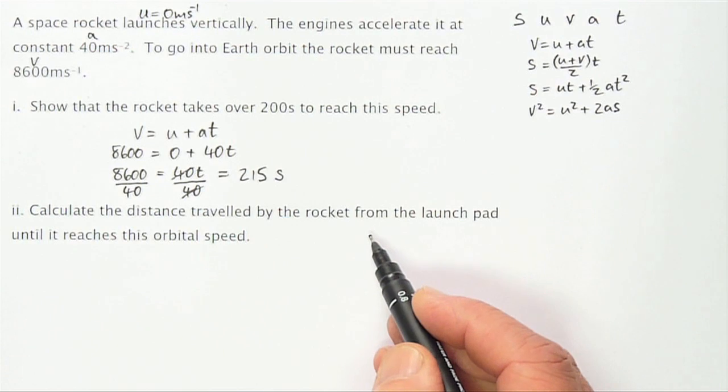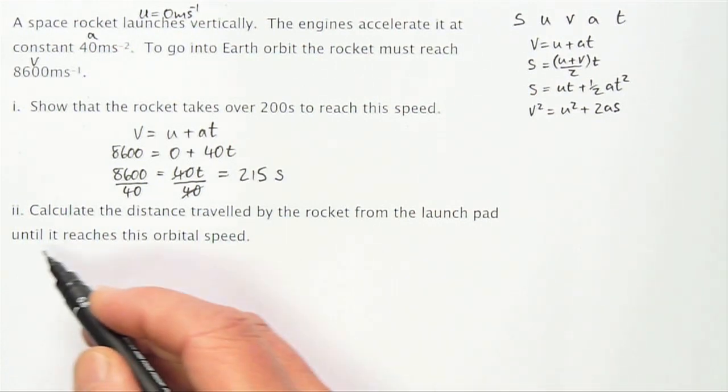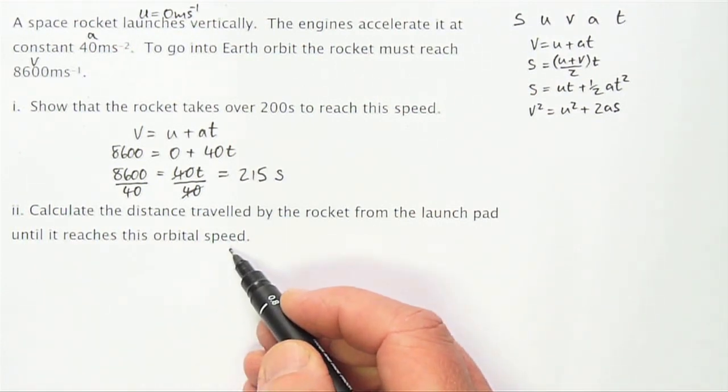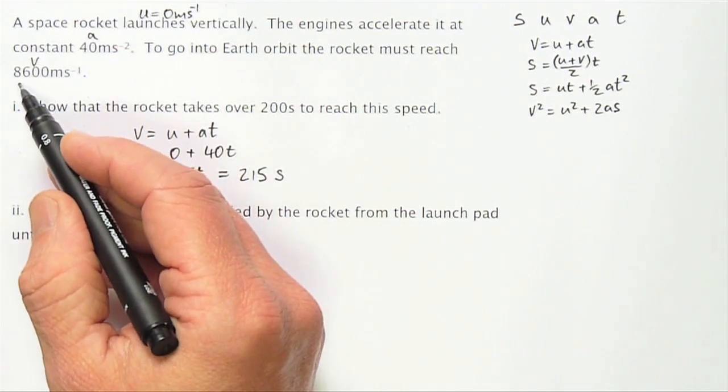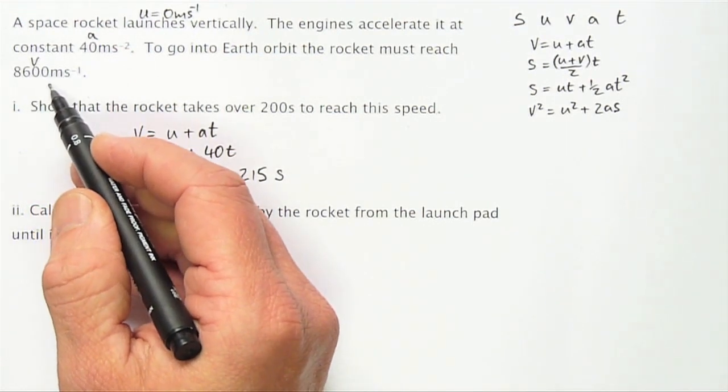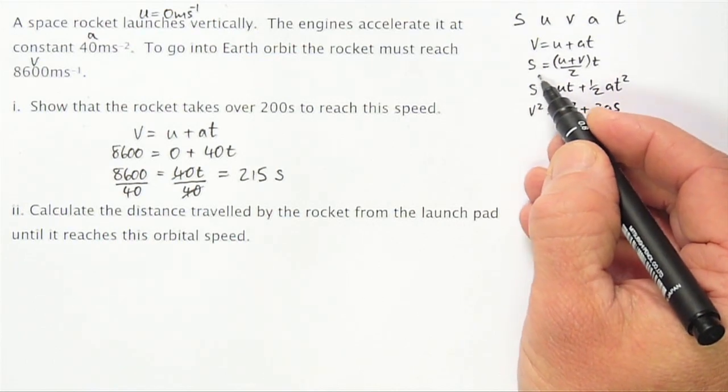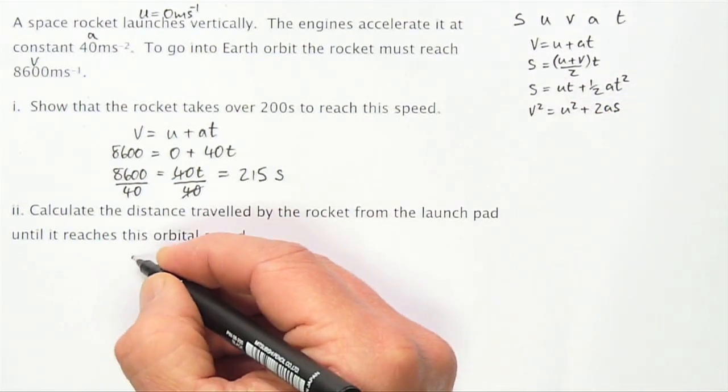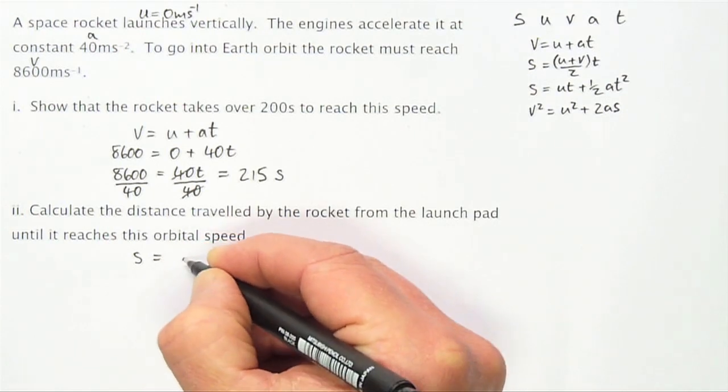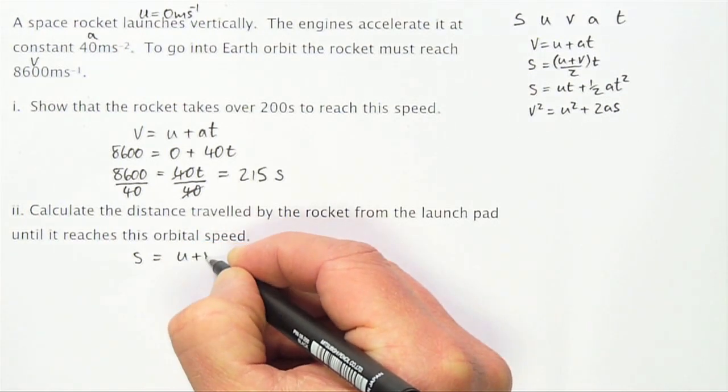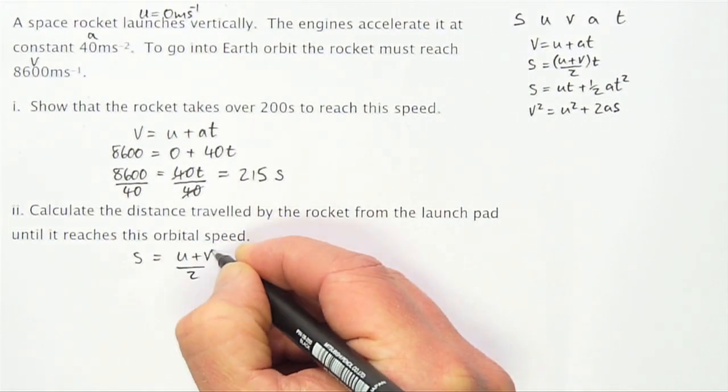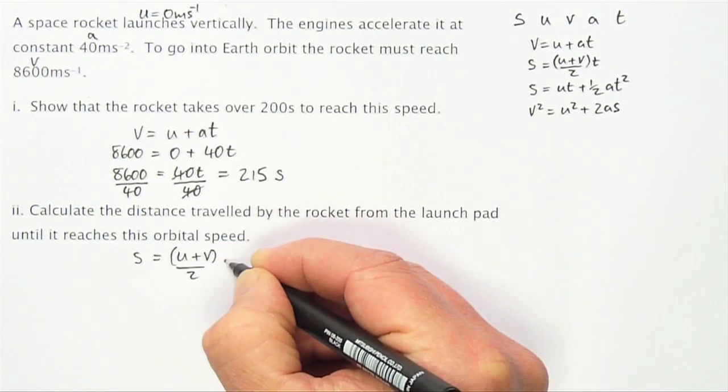Calculate the distance travelled by the rocket from the launch pad until it reaches this orbital speed, the orbital speed of 8600 meters per second. I'll choose to use the second equation here. That's S equals U plus V over 2 times T.